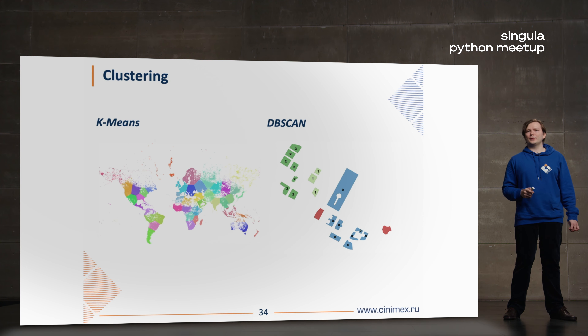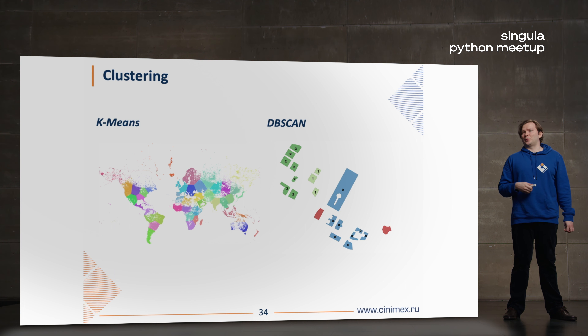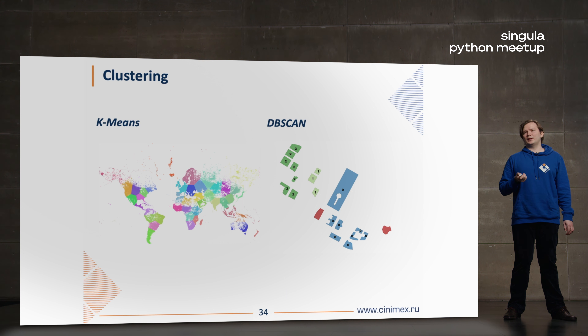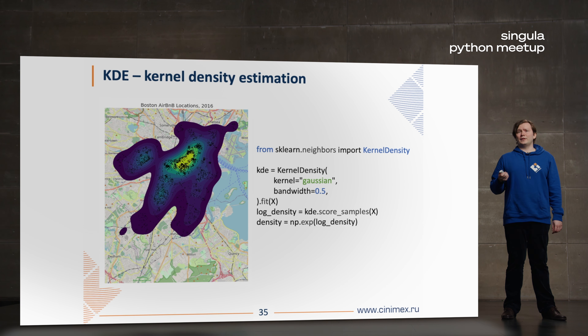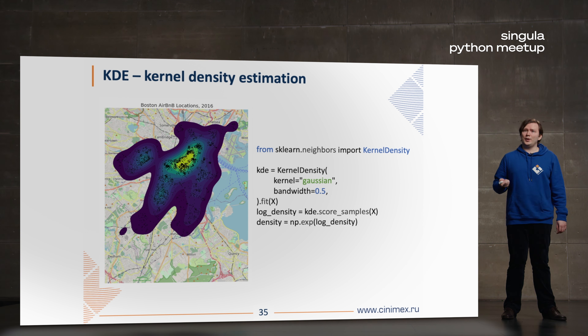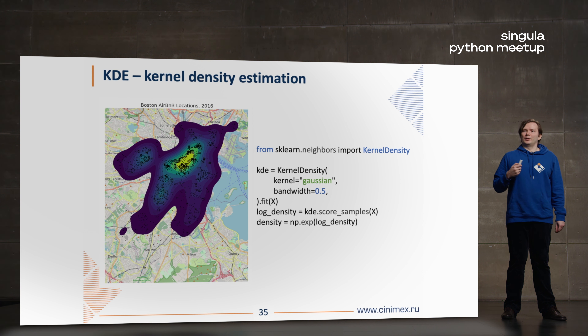You can also use clustering to find different types of patterns. You can use K-means or DBSCAN — I think DBSCAN is more appropriate for geospatial tasks. First, DBSCAN's logic is closer to geospatial data. Second, you don't need to choose the number of clusters in advance. Also, kernel density estimation is not only a way to visualize your data — it is also a good feature describing how many points are placed nearby a specific point. You can use a scalar learner to define the density score of your data and make a good feature for your analysis.